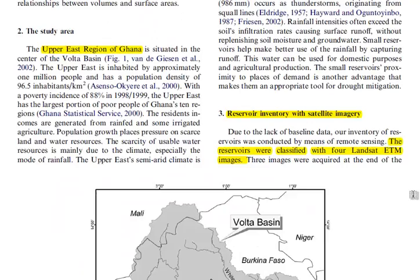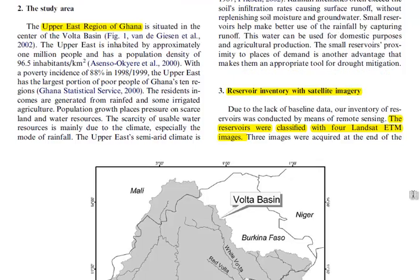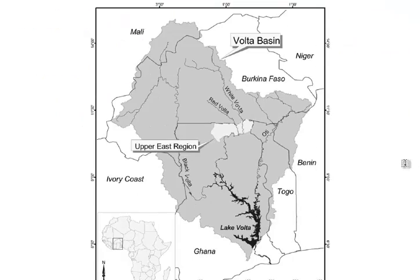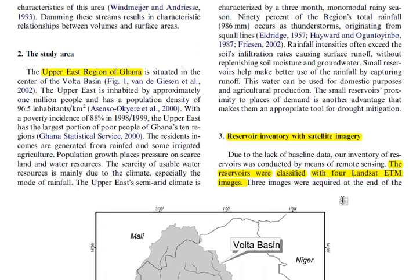The study area is the Upper East region of Ghana, which is fairly rich in terms of small reservoirs. It is a semi-arid, savannah area where a lot of agriculture is going on. A map shows where it can be found within the Volta Basin.